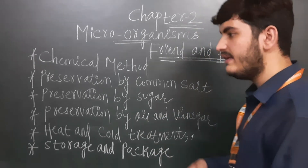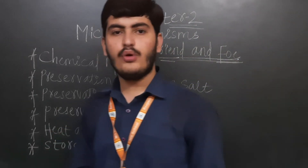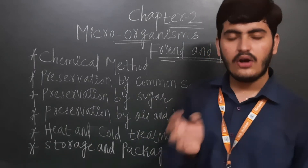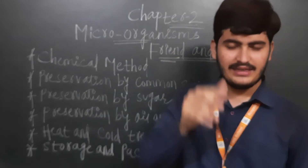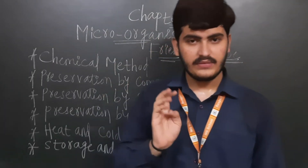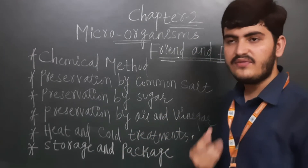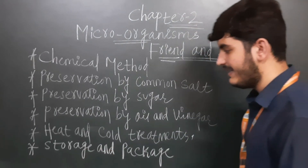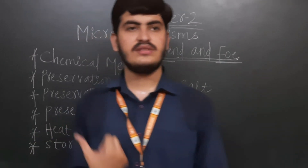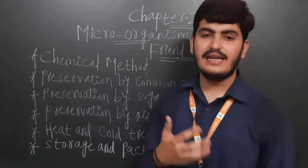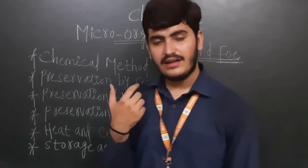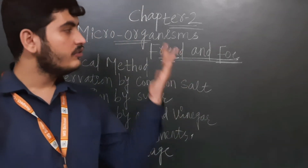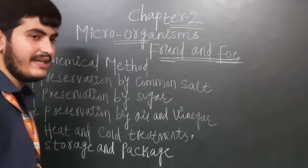For heat and cold treatment: when we boil milk, the heat kills bacteria. Then by cooling the same milk and keeping it at proper temperature, no bacterial growth occurs. The last method is storage and packaging. Nowadays vegetables and dry fruits are sold in airtight containers, which prevents the growth of microorganisms and keeps food fresh.